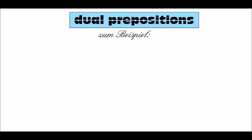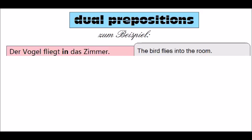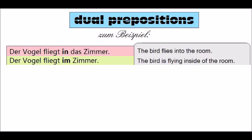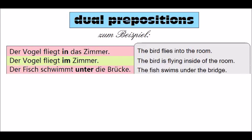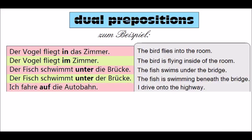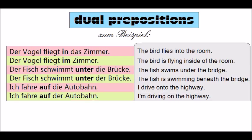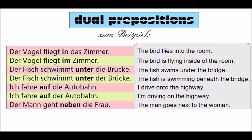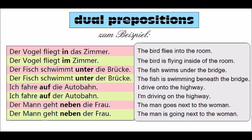Let's look at some examples showing the contrast between accusative and dative. 'Der Vogel fliegt in das Zimmer' — the bird flies into the room. 'Der Vogel fliegt im Zimmer' — the bird is flying inside the room. 'Der Fisch schwimmt unter die Brücke' — the fish swims under the bridge. 'Der Fisch schwimmt unter der Brücke' — the fish is swimming beneath the bridge. 'Ich fahre auf die Autobahn' — I drive onto the highway. 'Ich fahre auf der Autobahn' — I'm driving on the highway. 'Der Mann geht neben die Frau' — the man goes next to the woman. 'Der Mann geht neben der Frau' — the man is going next to the woman.